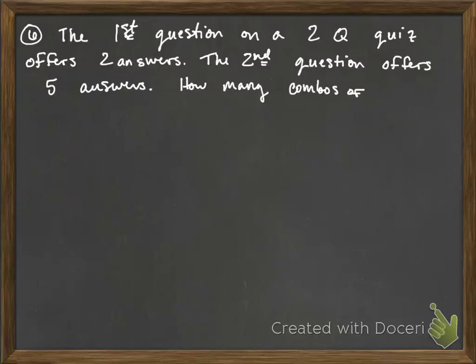Okay, so this question asks: the first question on a two-question quiz offers two answers, and the second question on the quiz offers five answers. How many combos of possible answers are there?